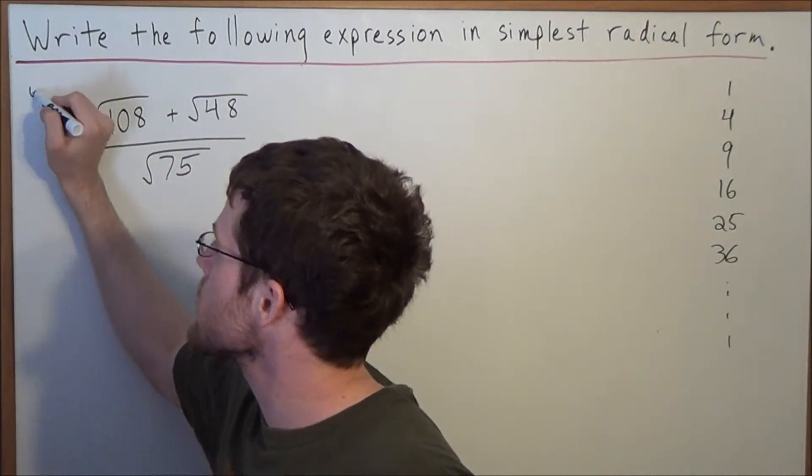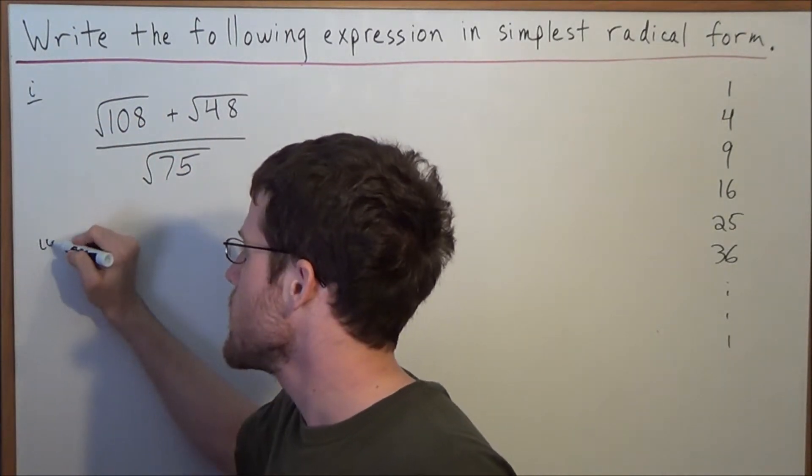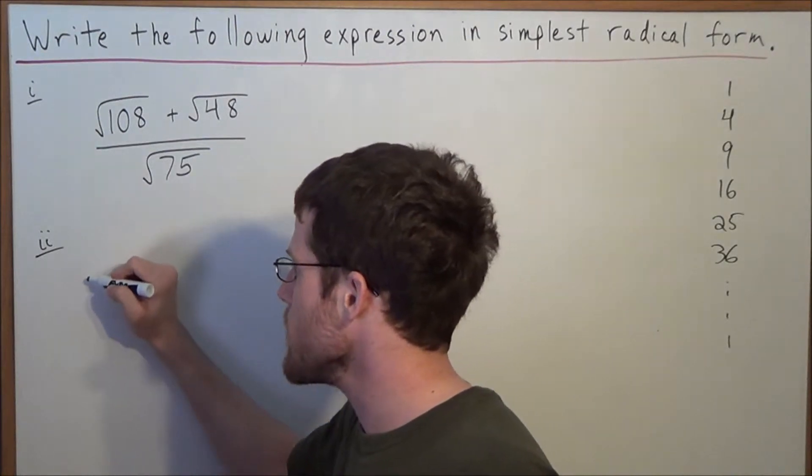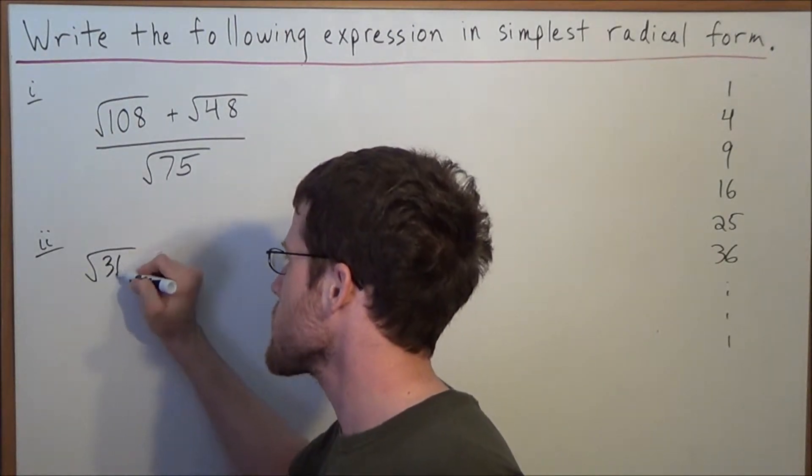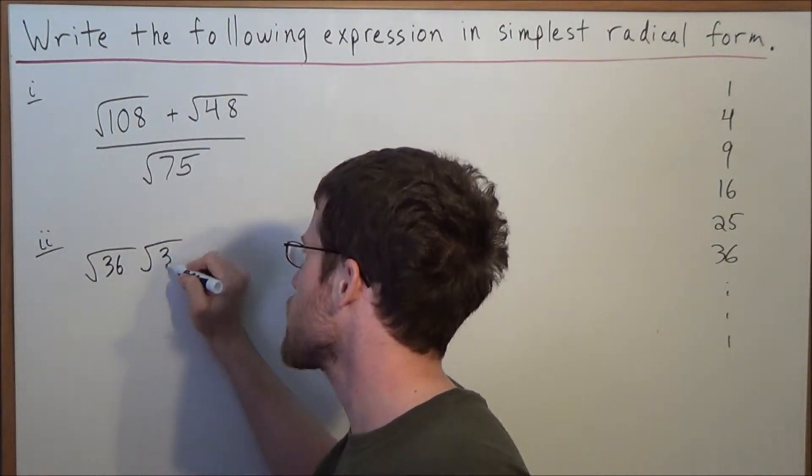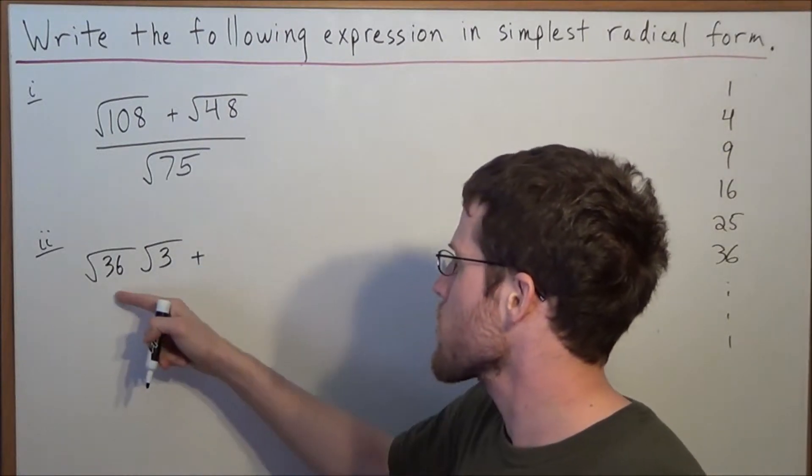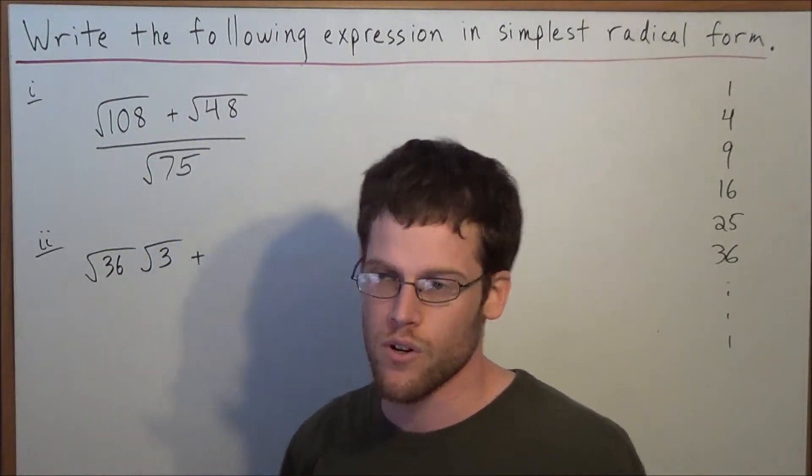So for the next line, we'll call this line 1 just to keep it organized. For line 2, instead of radical 108, we could call it radical 36 times radical 3. And you could even check 36 times 3 would bring you right back to radical 108.